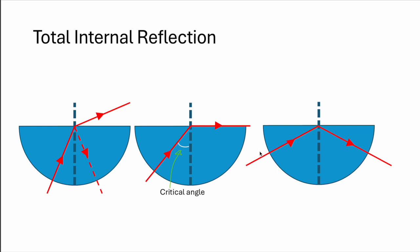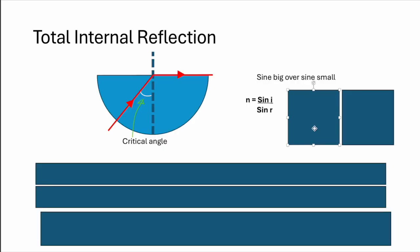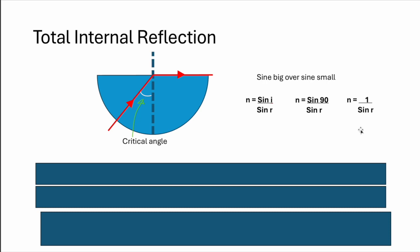And because using the earlier formula sine i over sine r, if one of the angles is already 90 degrees, then the other angle will be your critical angle. So n will be equals to 1 over sine c. C for critical.